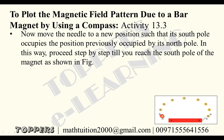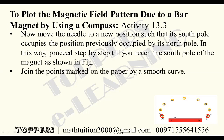Starting from the north pole, the north pole of the compass needle will be away and the south pole will be towards the north pole of the magnet. Take the compass and keep it at another position, mark those points, and keep moving it. Like this, moving the compass will take you to the south pole of the magnet — you get one field line. We started from the north pole and came to the south pole. Join the points marked on the paper by a smooth curve; this curve represents a field line.